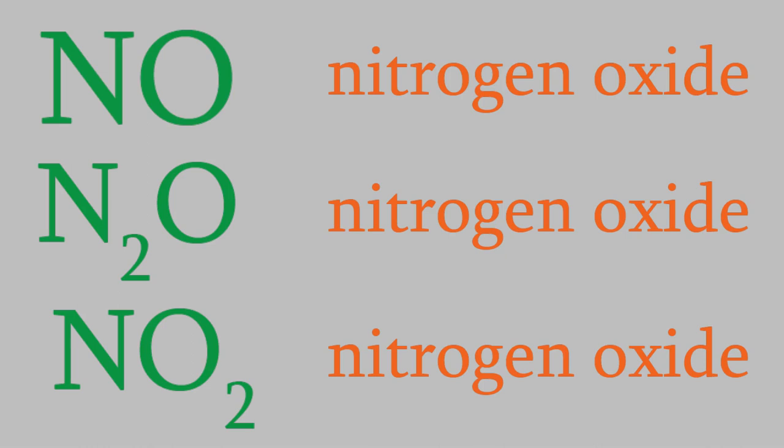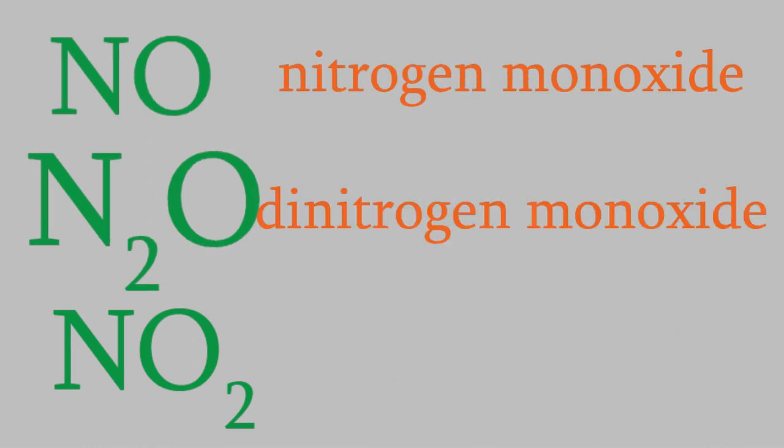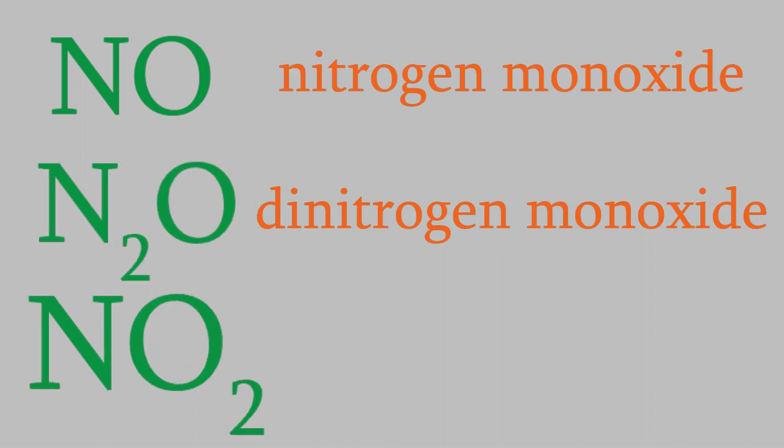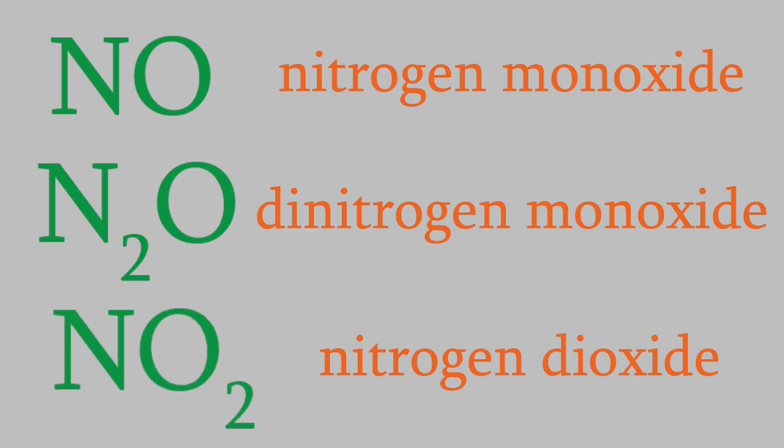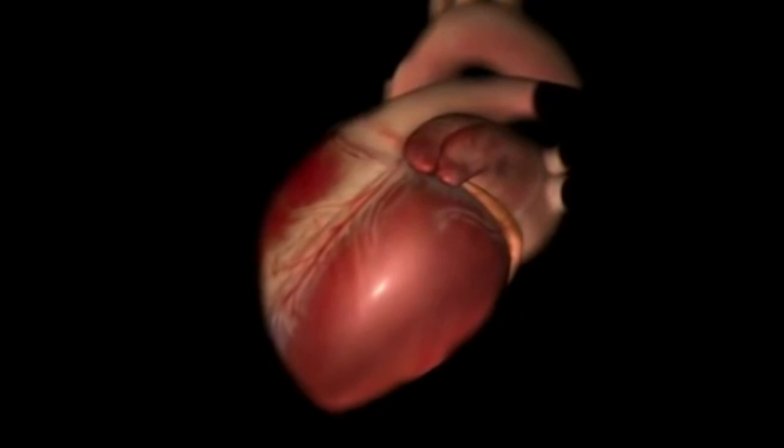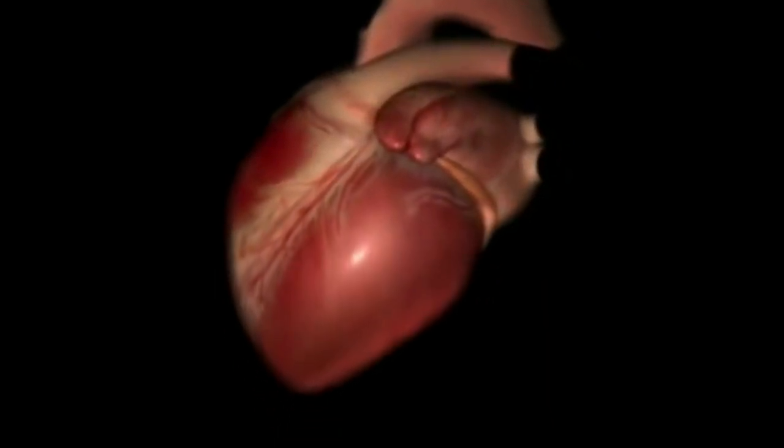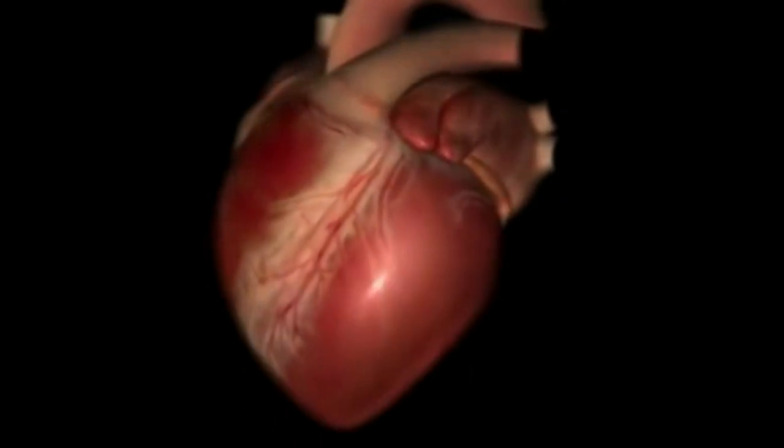This one is nitrogen monoxide. This one is dinitrogen monoxide. And this one is nitrogen dioxide. It's important to get these names just right. Nitrogen monoxide is a neurotransmitter. It's involved with the dilation of blood vessels and regulation of your heart rate. It's crucial for keeping you alive, and people who have problems synthesizing nitrogen monoxide in their bodies have serious health risks.